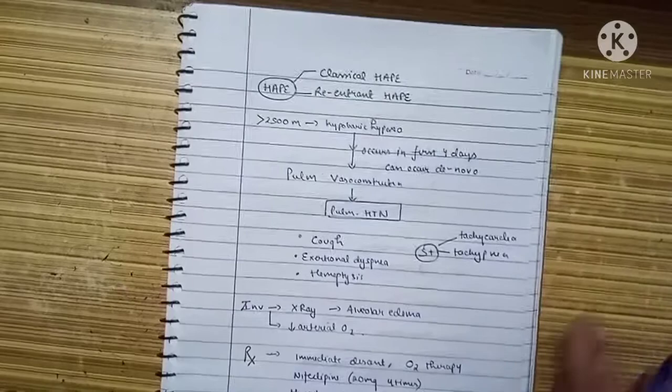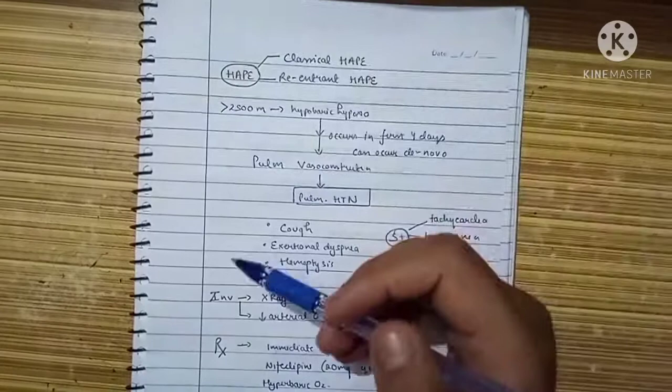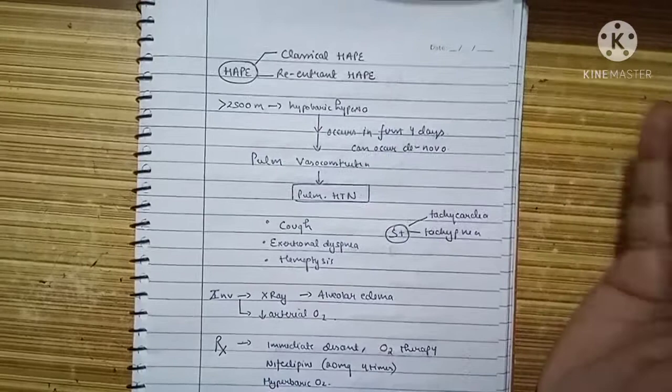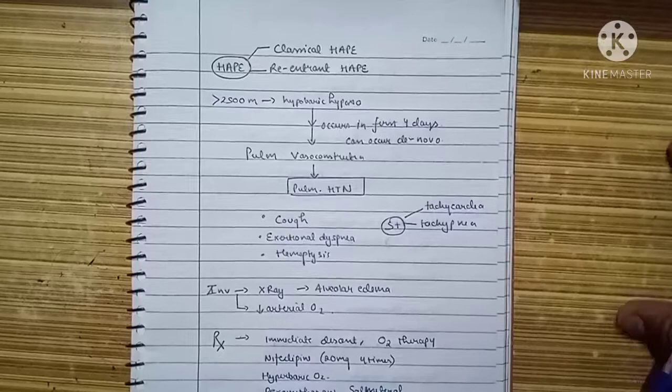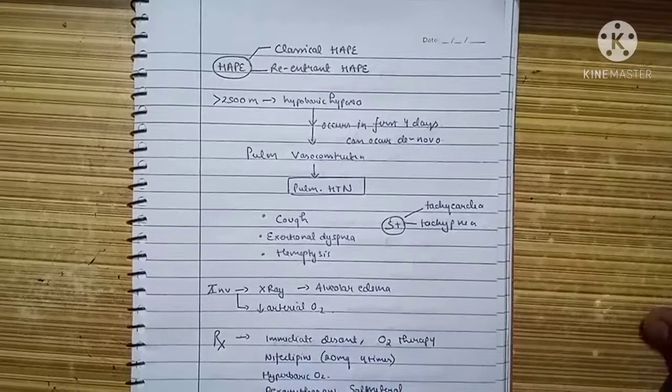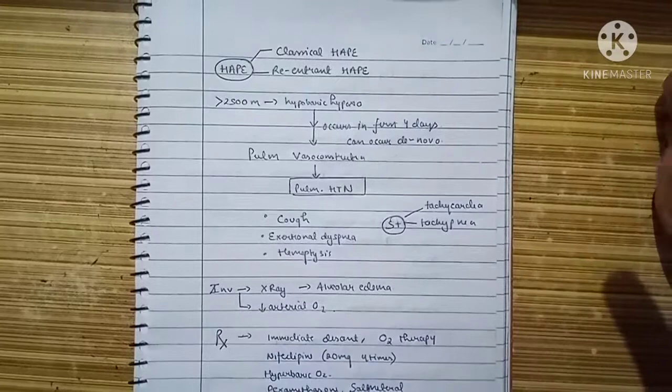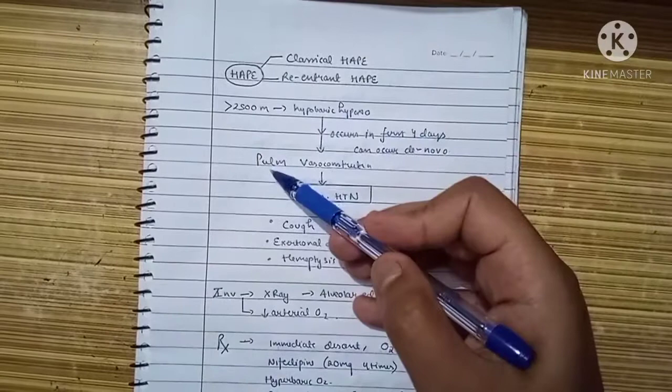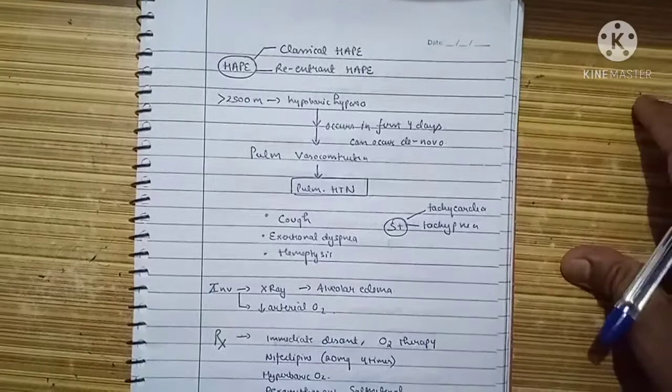Let's understand what's actually happening in HAPE. At altitudes more than 2,500 meters, patients can get AMS or CMS because of hypobaric hypoxia. Hypoxia leads to vasodilation everywhere in the body except in pulmonary vasculature, where we have vasoconstriction. Hypobaric hypoxia leads to pulmonary vasoconstriction, which causes pulmonary hypertension.